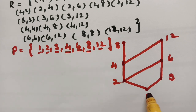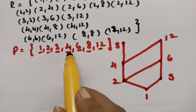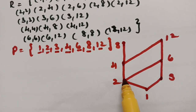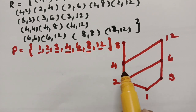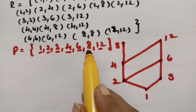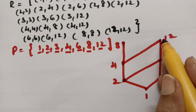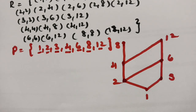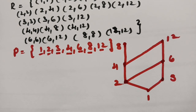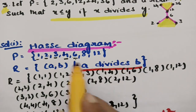So to summarize: 1 is the minimum element. Make an edge between 1 and 2, since 1 divides 2. Make an edge between 1 and 3. Since 2 divides 4, make an edge with 2 and 4. Since 3 divides 6 and 2 also divides 6, make edges for 6. Since 4 divides 8, make an edge. Since 6 divides 12 and 4 also divides 12, make those edges. This is the Hasse diagram for the relation A divides B.